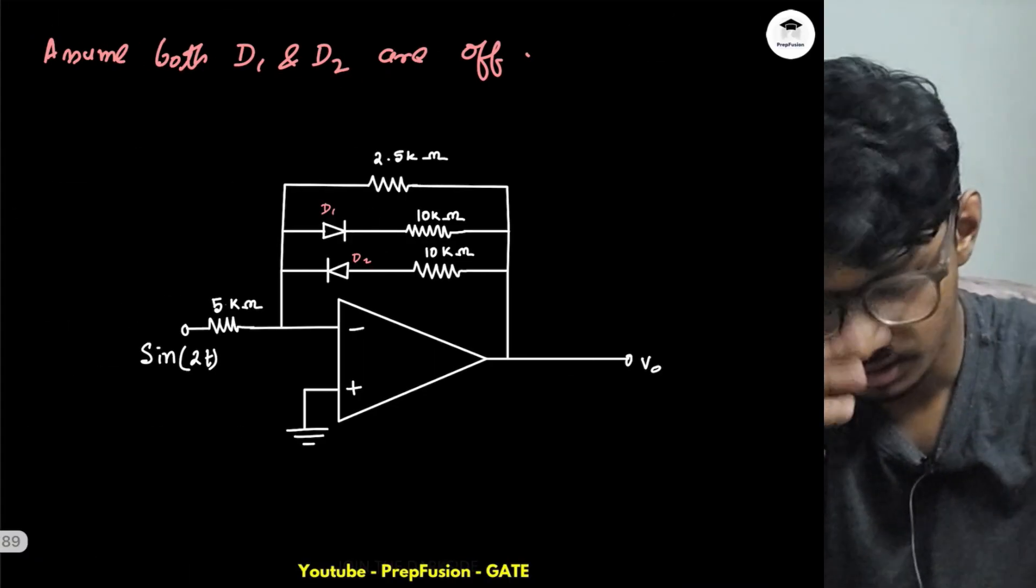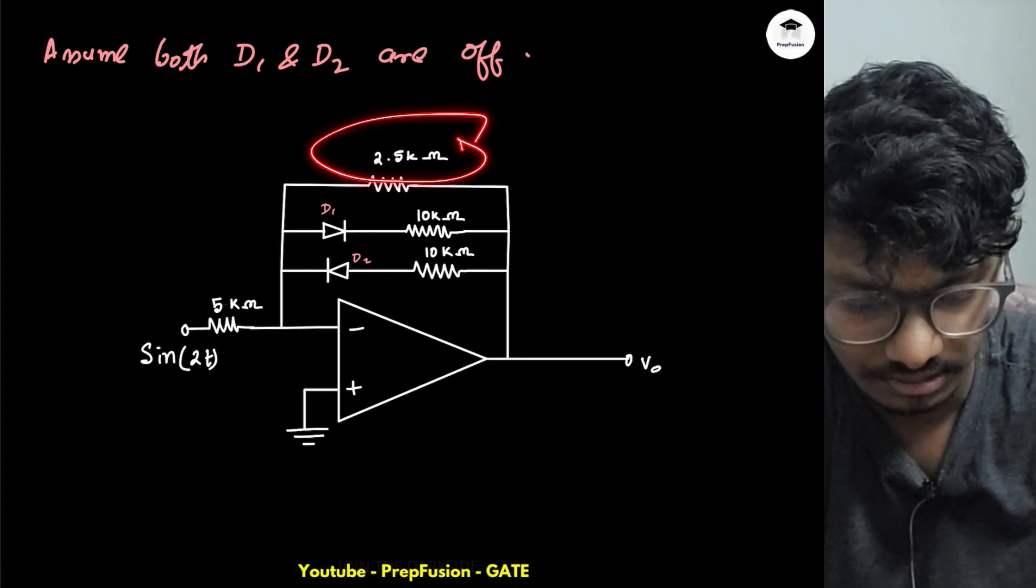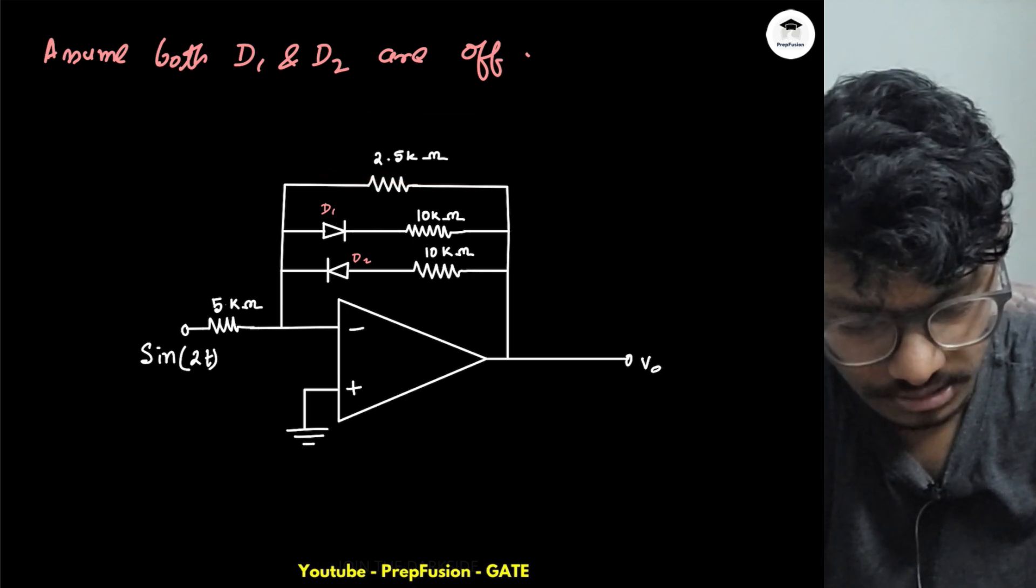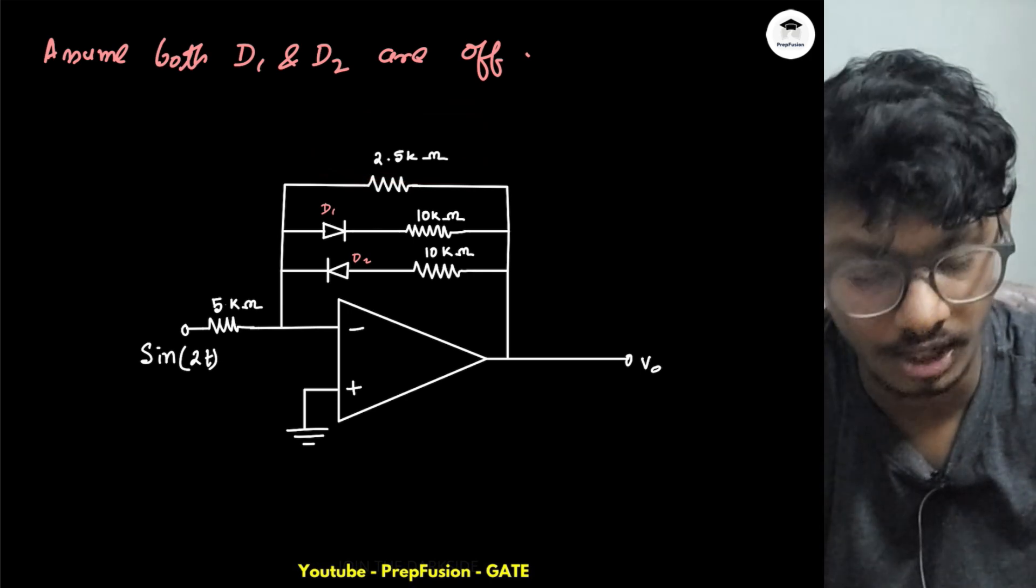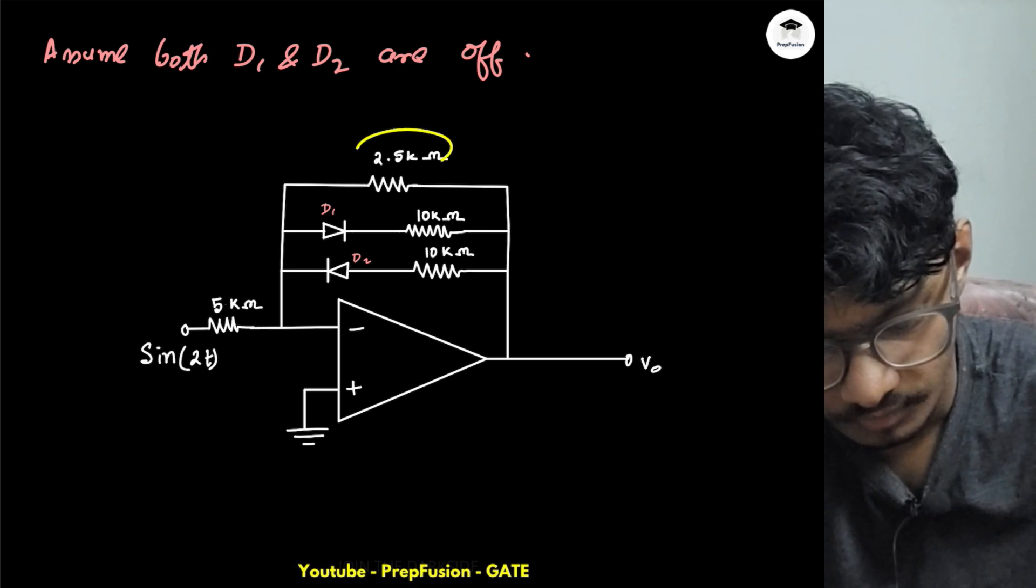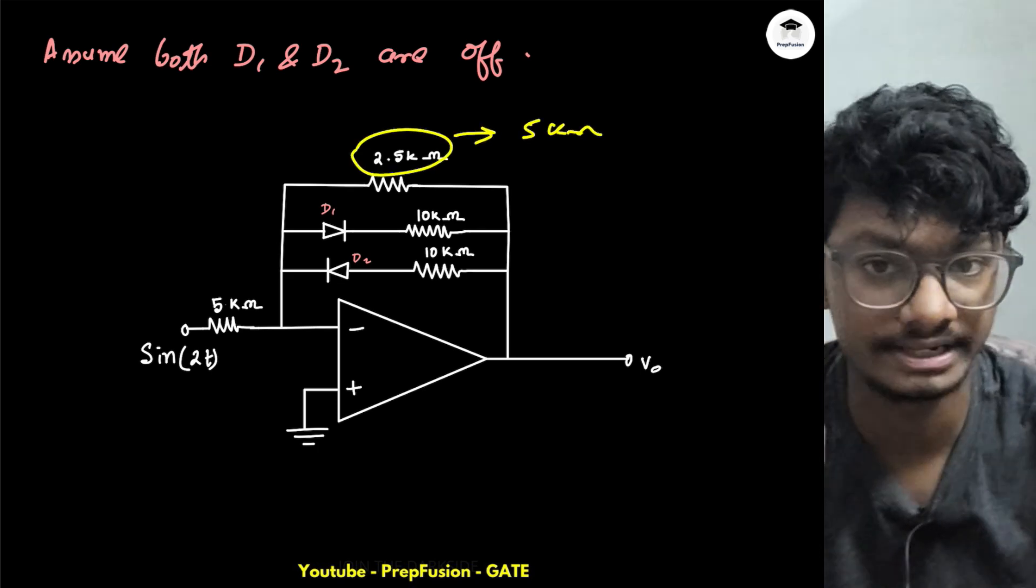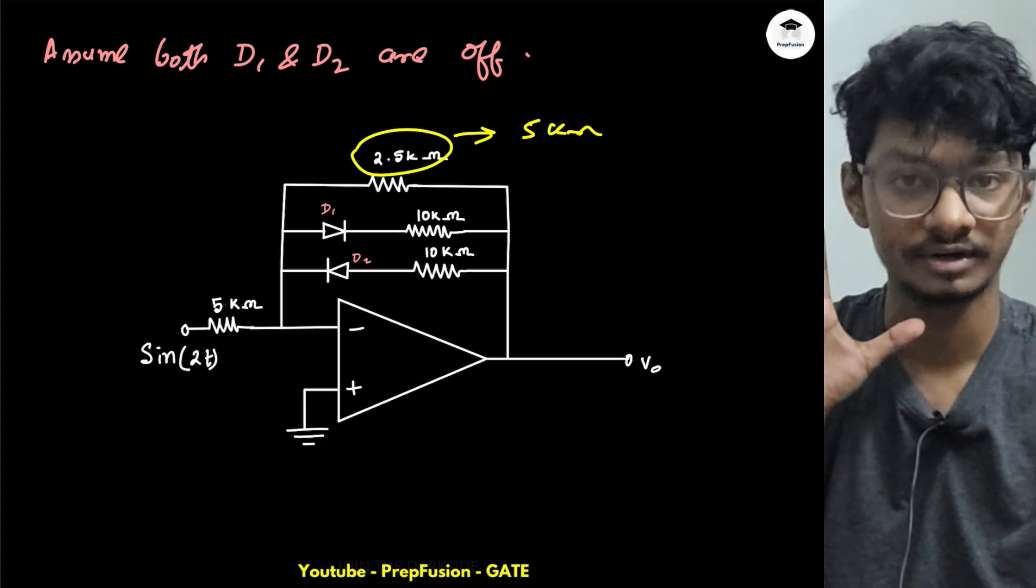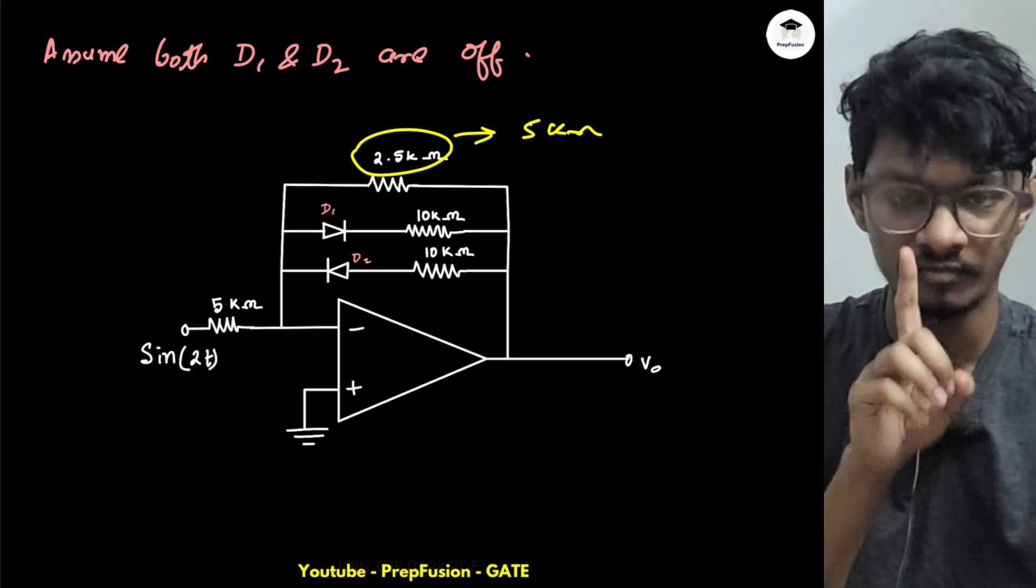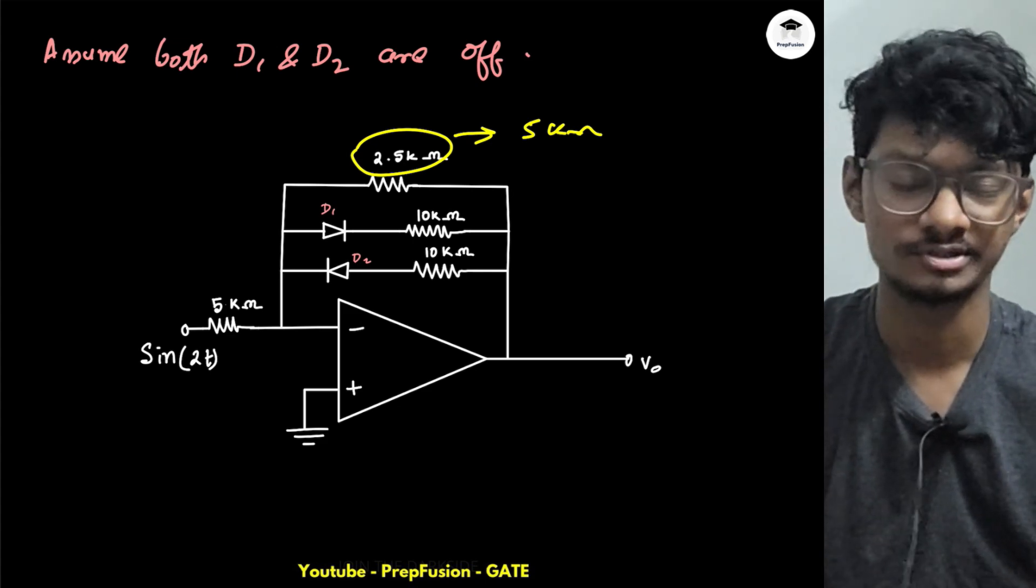The homework for you is: what if I change this? What if this goes to 5 kilohms? Then will the states of the diode change and how will the output voltage waveform look like? That is the homework for you guys.